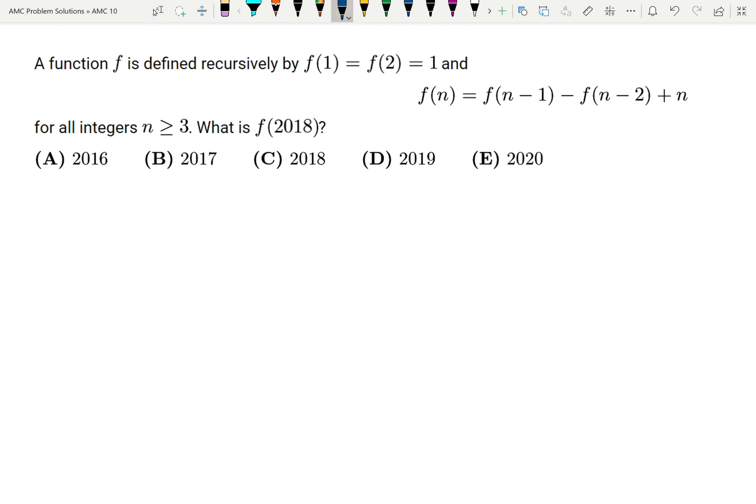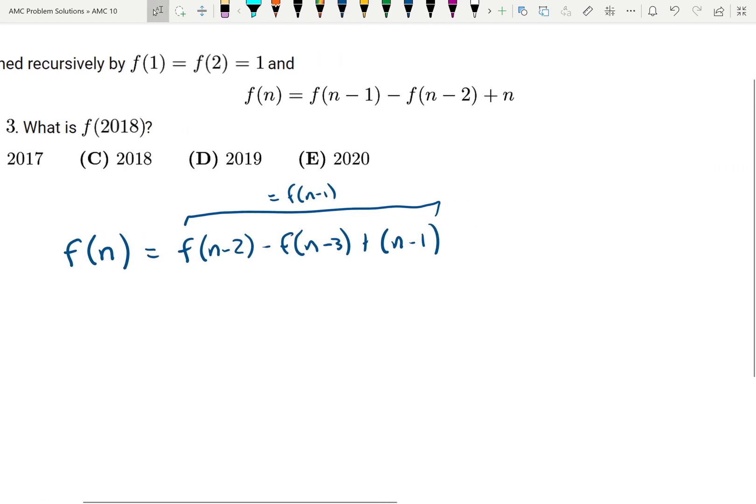We're going to start by writing f(n) as follows. So f(n-1) is the same thing as f(n-2) - f(n-3) + (n-1). So that is equal to f(n-1). And then we still have this f(n-2) plus n.